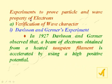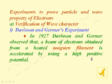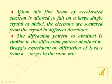Experiments to prove the particle and wave property of electrons. The wave character is verified by Davison and Germer's experiment, which proved that electrons have wave character. In 1927, Davison and Germer observed that a beam of electrons obtained from a heated tungsten filament is accelerated using a high positive potential, and when this fine beam is allowed to fall on a large single crystal of nickel, the electrons are scattered from the crystal in different directions.